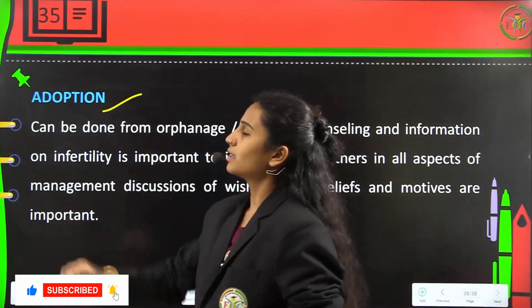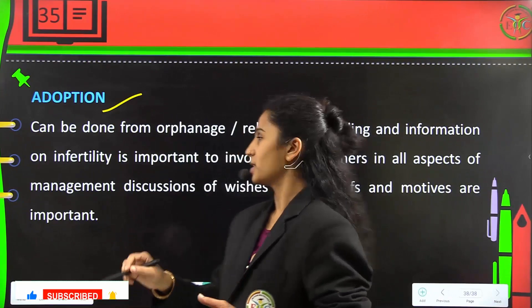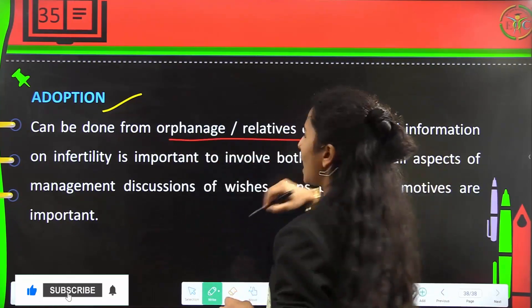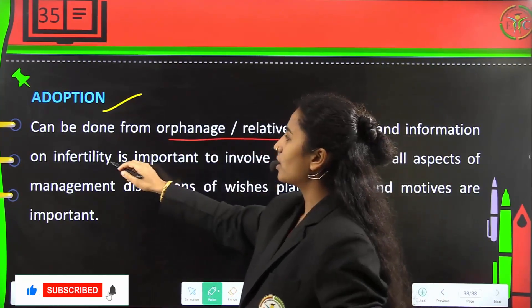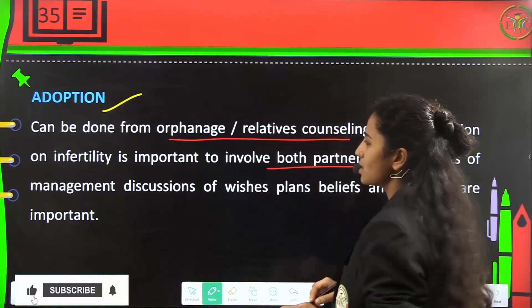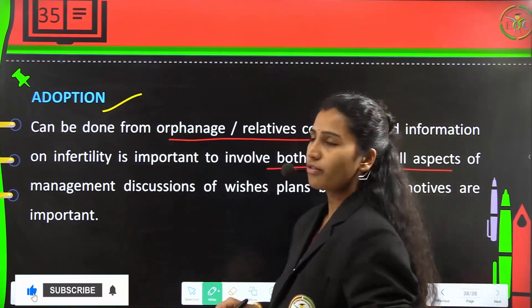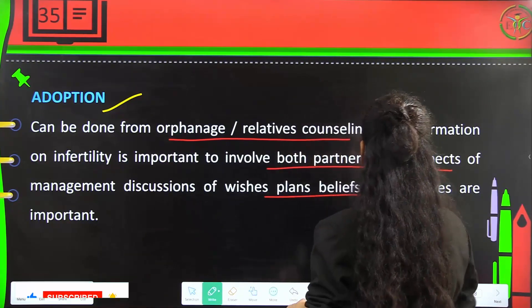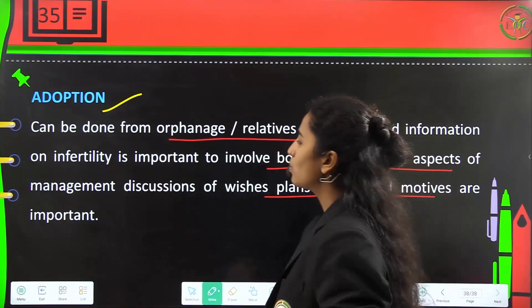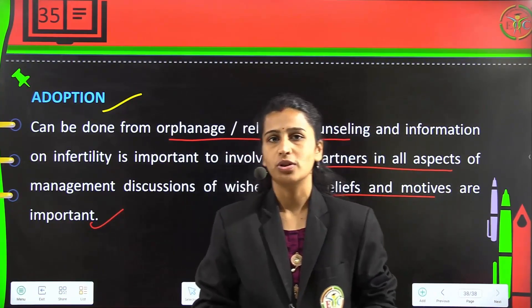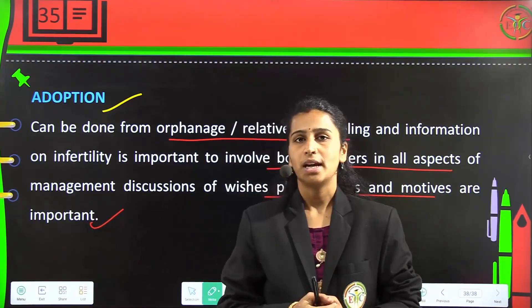Adoption is also the best option, which can be done through orphanages or relatives. Counselling and information on infertility is important, and both parents should be involved in all aspects of management. Discussions of wishes, plans, beliefs, and motives are very important. Thank you.